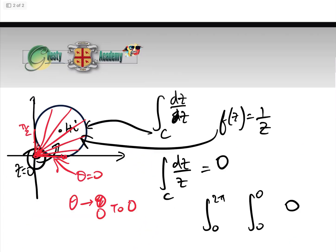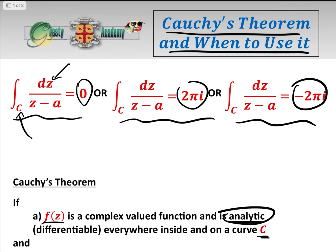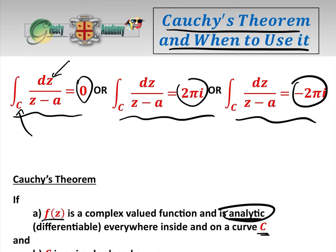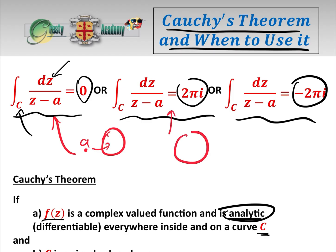To summarise: the integral of dz over z minus a around C equals zero when a is outside the contour; it equals two pi i when a is inside and we go anticlockwise; and it equals minus two pi i when a is inside and we go clockwise. Those are the three basic answers.